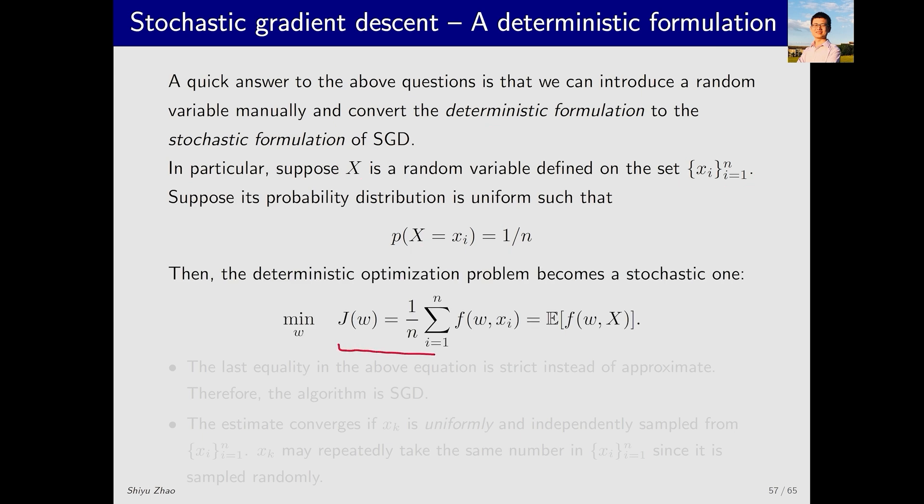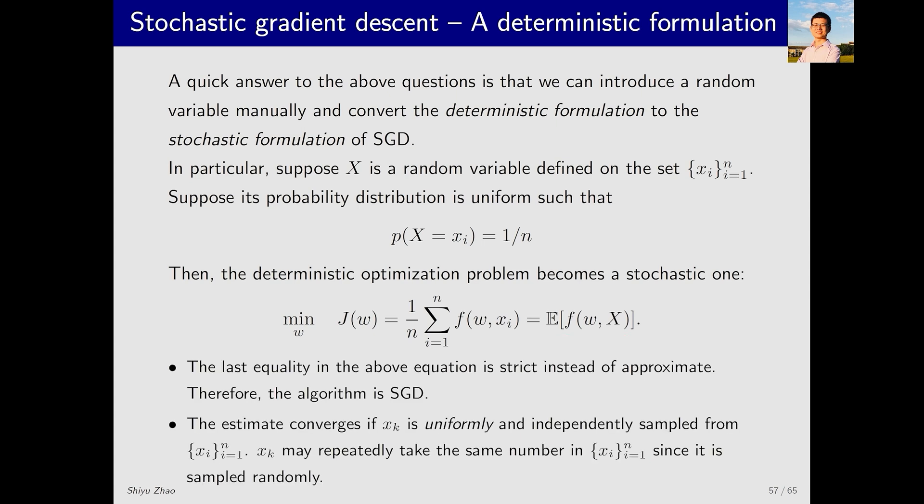Now, let's look at the objective function J(w). It equals 1/n times the sum of f(w,x_i). By definition of expectation, it becomes E[f(w,X)]. Then, the algorithm to solve this problem is naturally the SGD algorithm. The idea here is that even though there were no random variables, by introducing one we can transform the problem formulation so that we can apply the SGD algorithm.